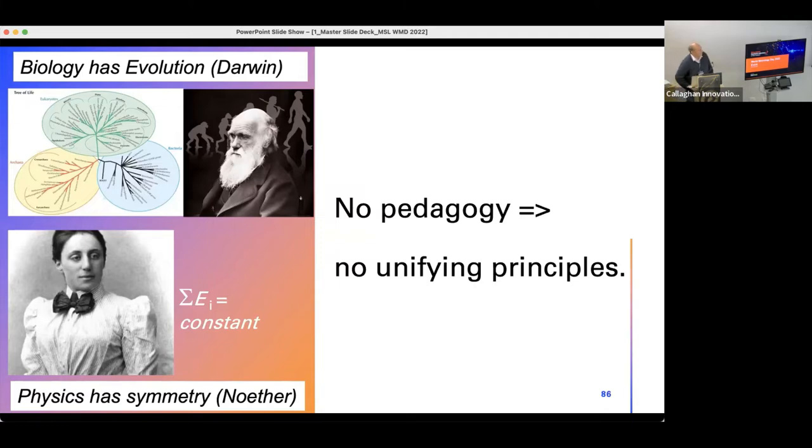So what do I have in mind? Well, if you look at biology, Darwin's theory of evolution tends to unite everything. Everything in biology tends to hang off it, and not much in biology makes much sense without it. It's the single unifying principle that ties biology together.